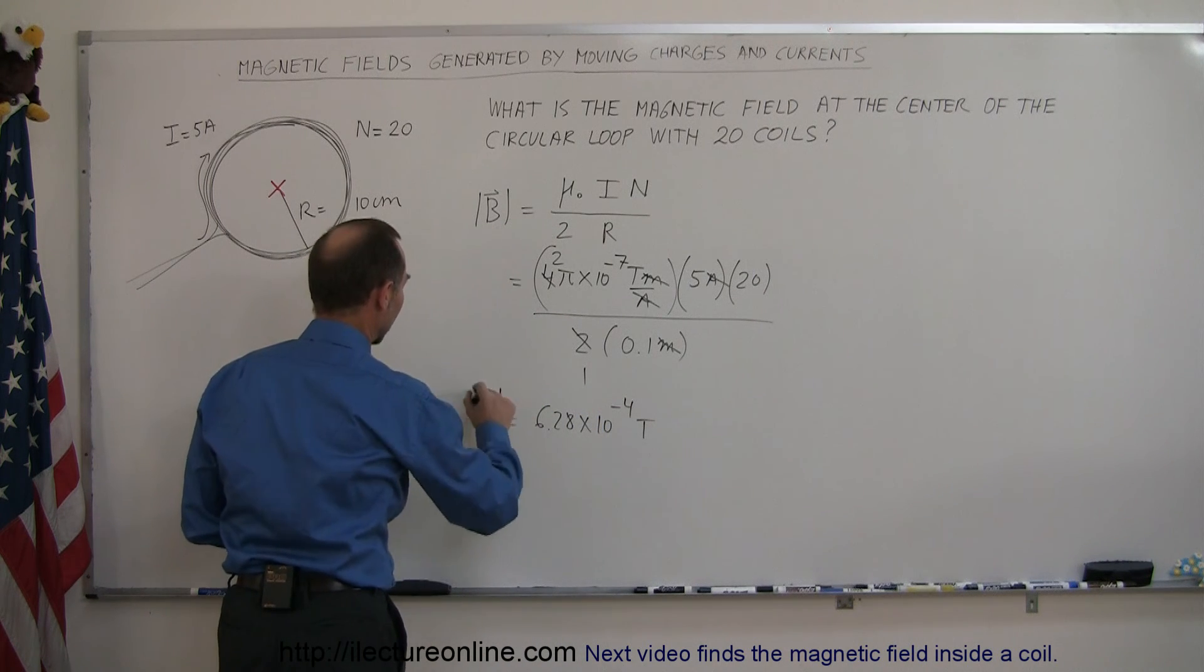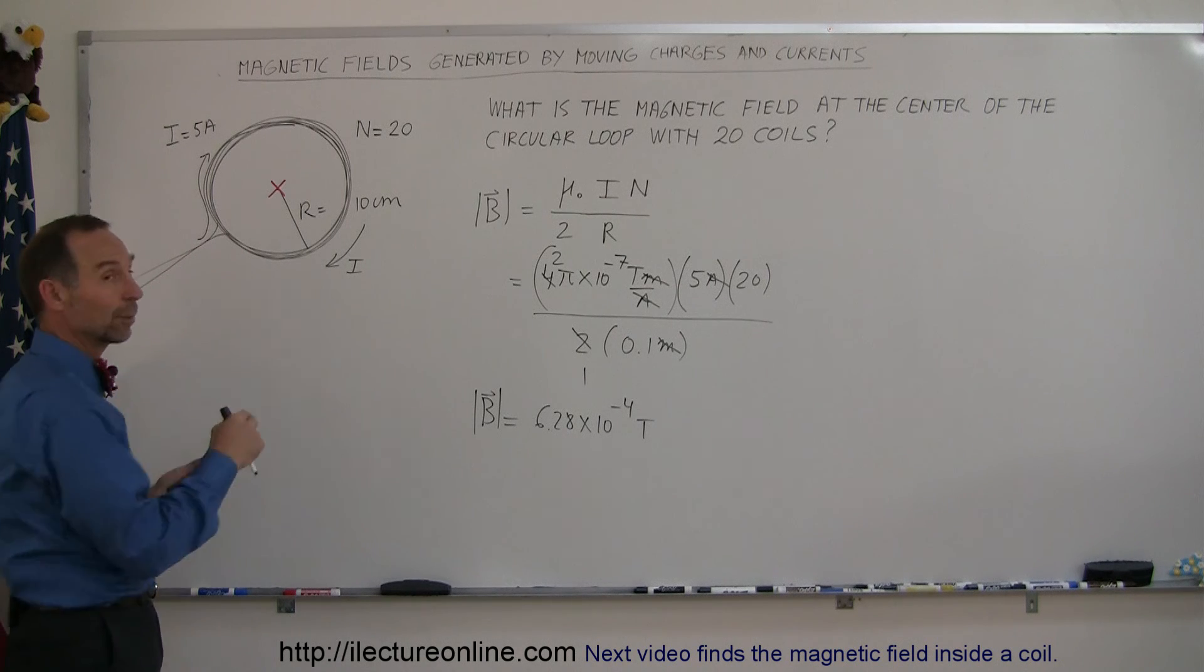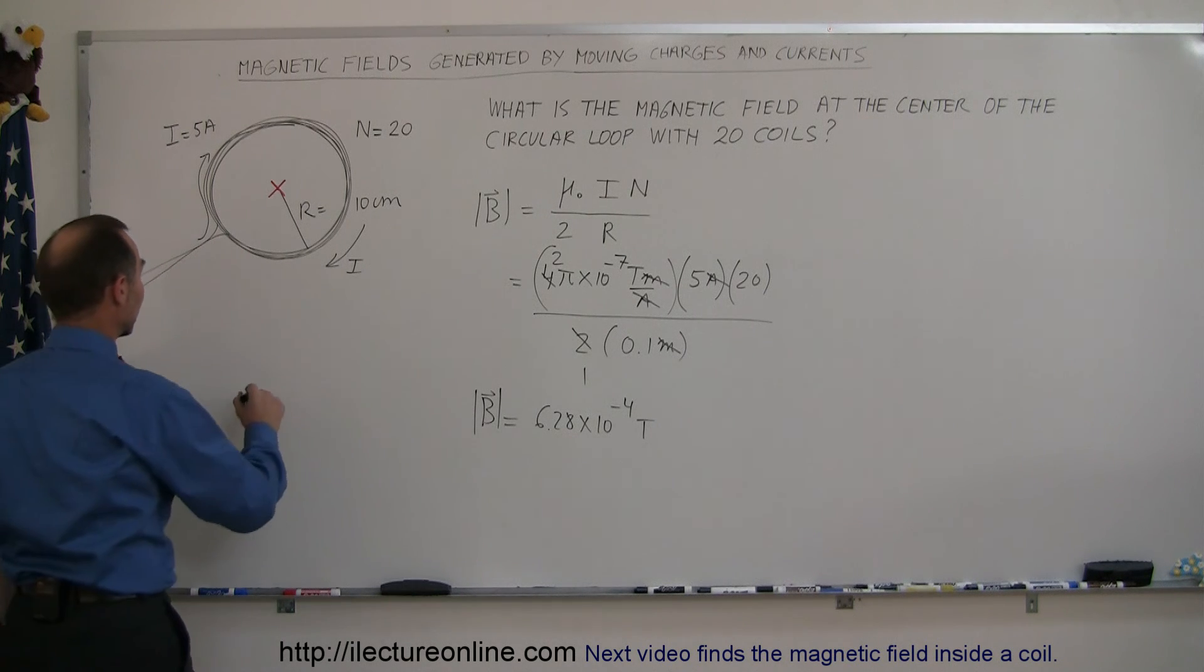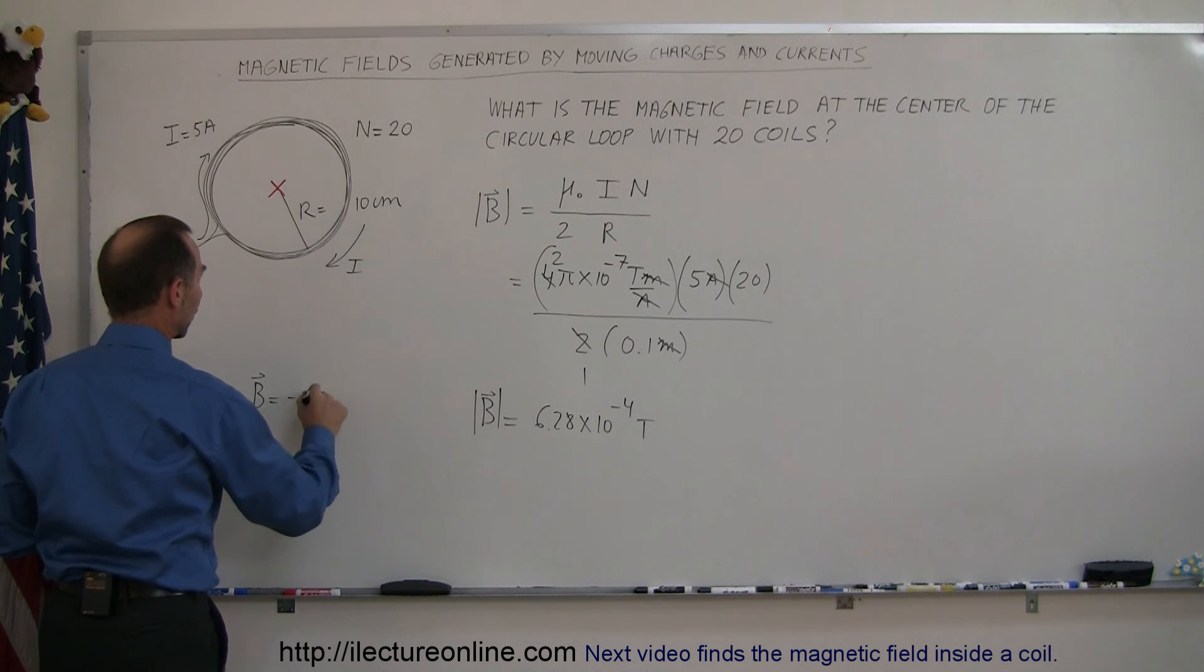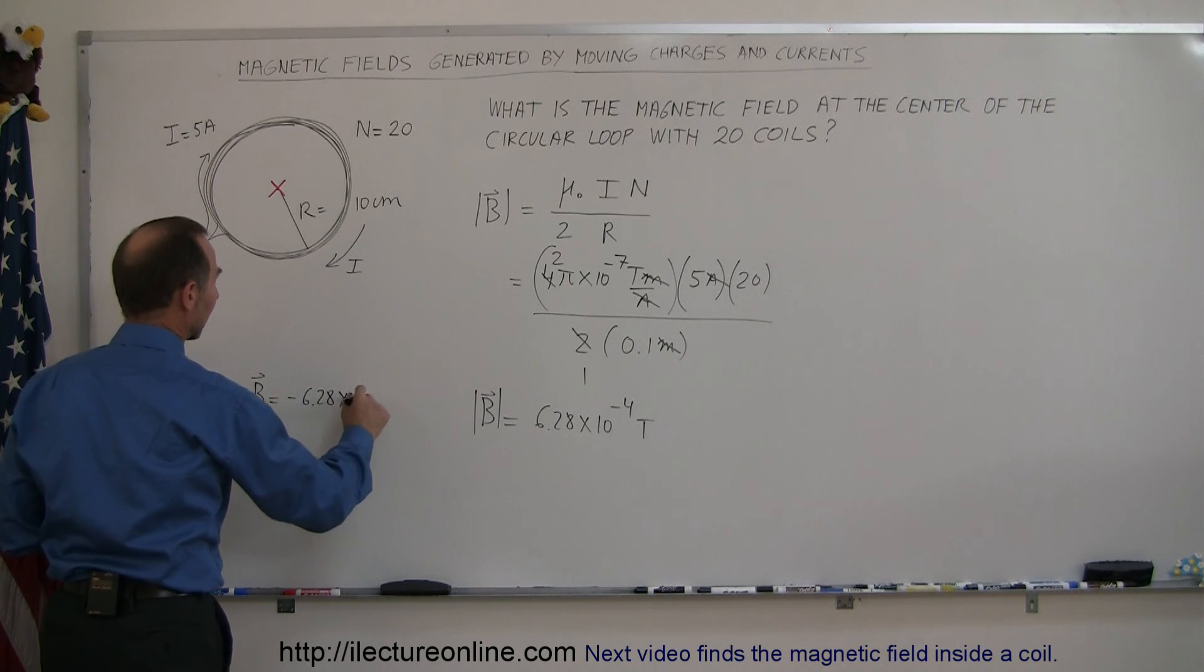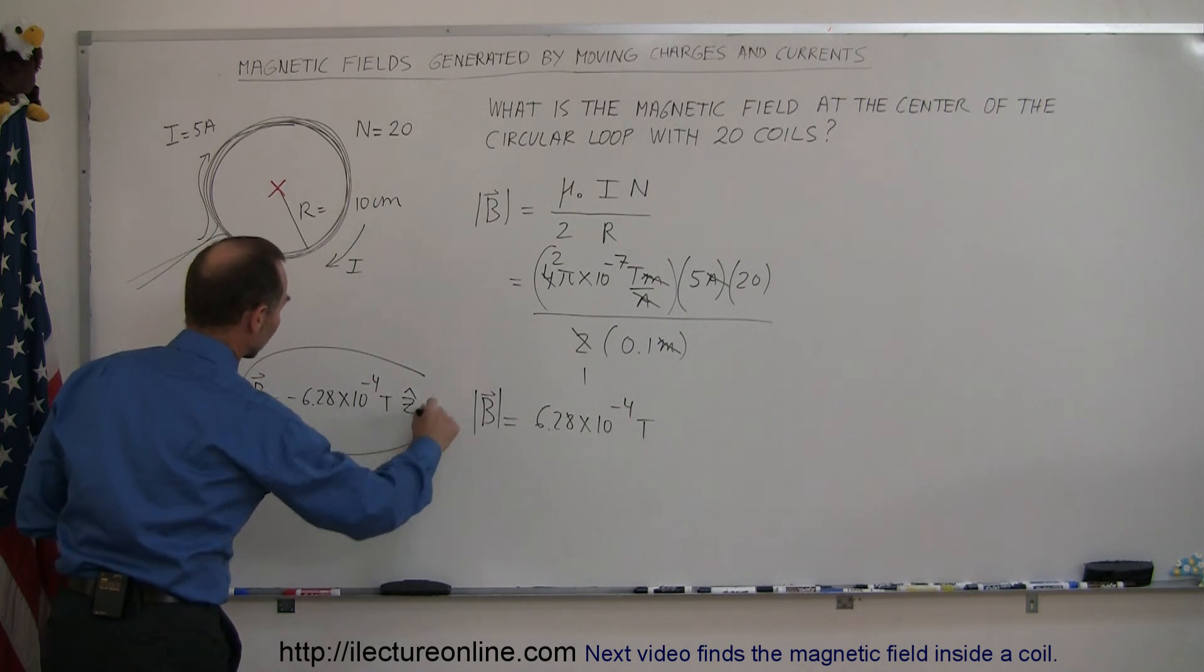That's the magnitude of the field and if we want to write it as a vector quantity since it's into the board and if we call that the z direction we can then say that the magnetic field is equal to negative 6.28 times 10 to the minus 4 teslas in the z direction.